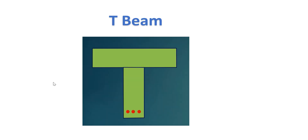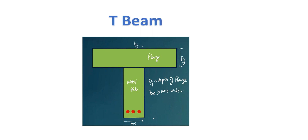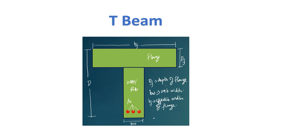For a T-beam, the top part is called the flange and the vertical part is called the web or rib. The depth of the flange is denoted as df, width of the web as bw, effective width of the flange as bf, total depth as capital D, and the area of steel in tension as Ast.